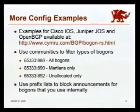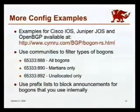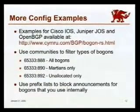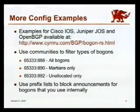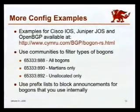One new thing we're about to introduce — we were hoping to have it done by today but it didn't happen — is that we're going to start advertising the Bogons with multiple communities, so that if you want to take different actions based on whether a Bogon is a Martian or an unallocated address, you can filter based on those communities. All routes will retain their 888 community tags, so if you want to filter everything you don't have to change anything. This will probably be done within a week.